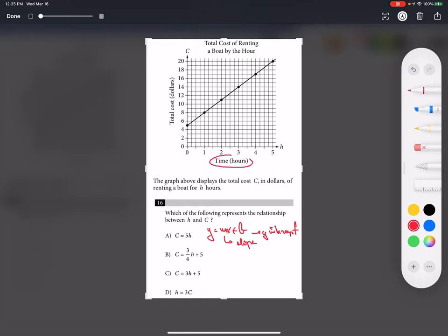My X is time, that is H, and my Y is the total cost, which is C. So let's do this.